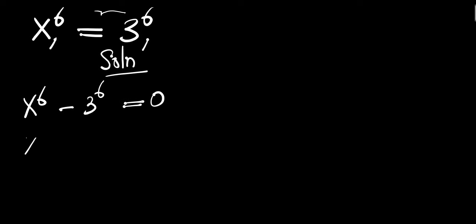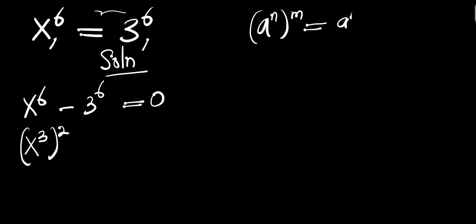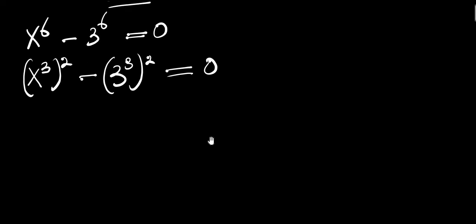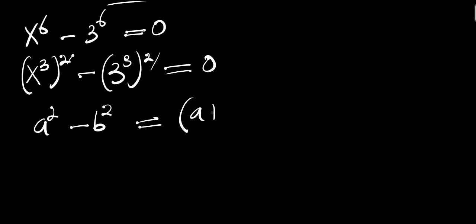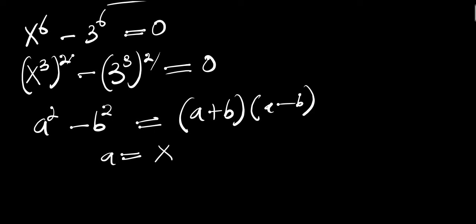This can give us x^3 squared minus 3^3 squared, equals 0. Remember, if you have a^m raised to power m, that equals a^(m×m). We can apply the difference of two squares because we have a squared minus b squared, which equals (a + b)(a - b). In this case, a equals x^3 and b equals 3^3.